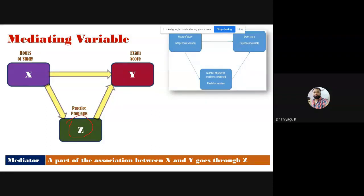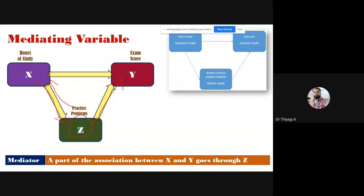In the case of a mediating variable, there is a part of the association between X and Y that goes through Z. Here Z is not directly affecting Y. In the previous confounding case, Z was affecting both X and Y. But here, X influences Z, and through Z there is also an effect on Y. This is called the mediating effect — Z is a mediator between X and Y.